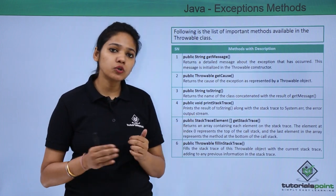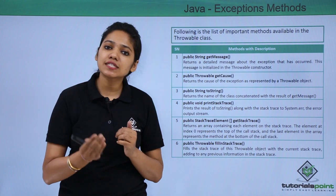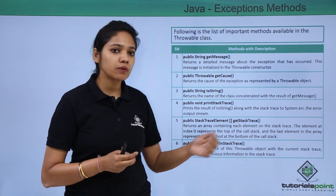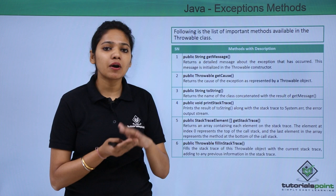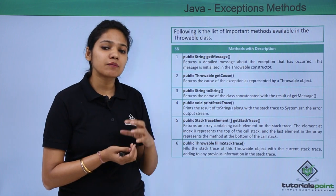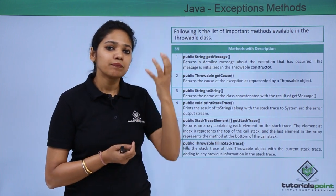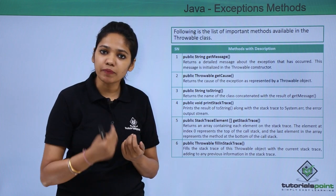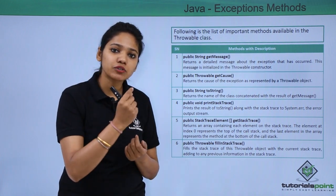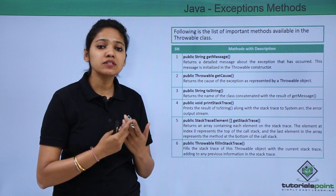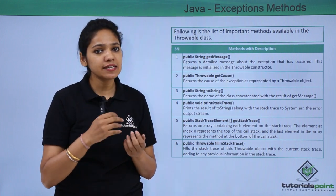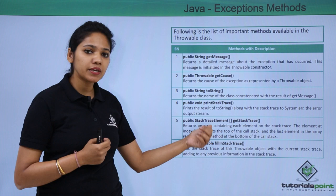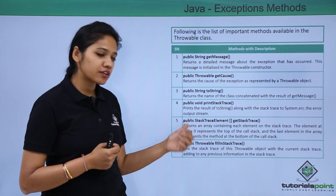If you want to print what kind of exception has occurred to your console, we have already spoken about how exceptions are maintained in a stack. There is a stack which maintains the list of methods — the method where the exception occurred and the methods that handle it. All this information is available in your stack trace.